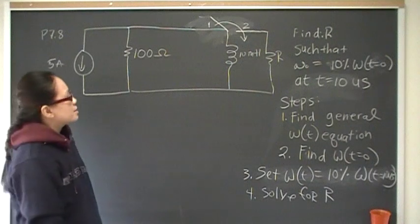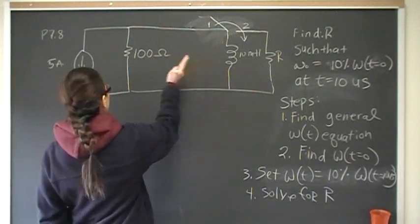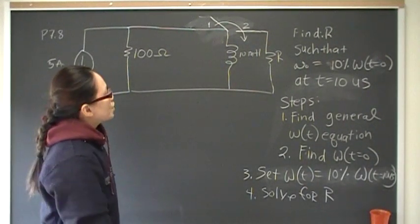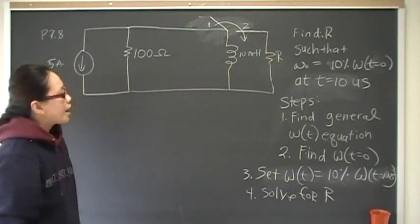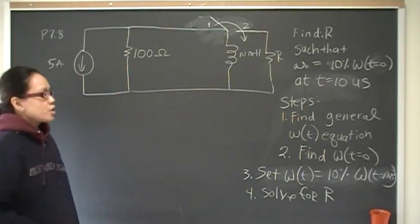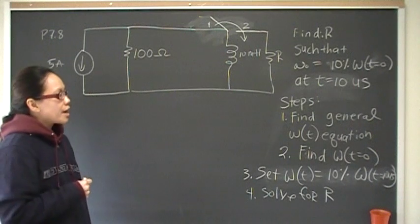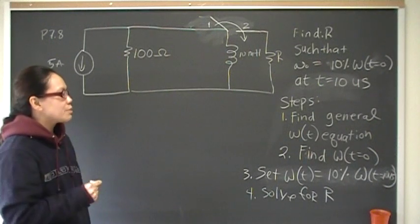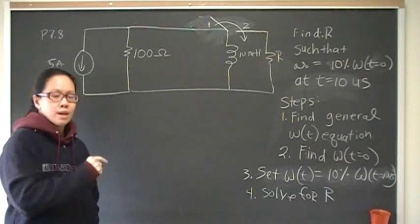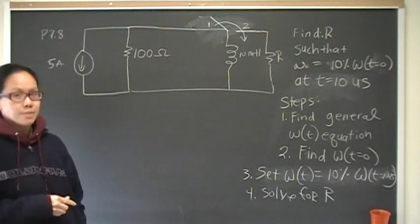At time 2, the switch closes, disconnecting the inductor from the independent source and connects it with a resistor. We want to find the value of R such that at 10 microseconds, we still have 90% of whatever was the energy that was stored in the inductor at time 0.